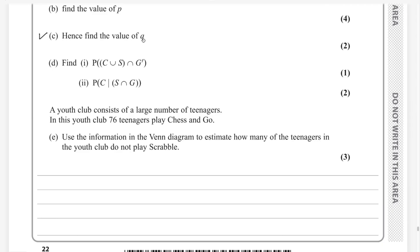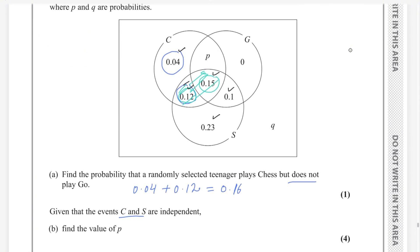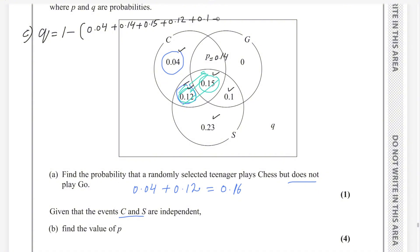Part C: find the value of Q. It is two marks. We already got the answer of P, which is 0.14. As you know, total probability for all events is always equal to 1. If you subtract all other probabilities from 1, we get the answer of Q. Q equals 1 minus (0.04 plus 0.14 plus 0.15 plus 0.12 plus 0.1 plus 0.23), and we get Q as 0.22.